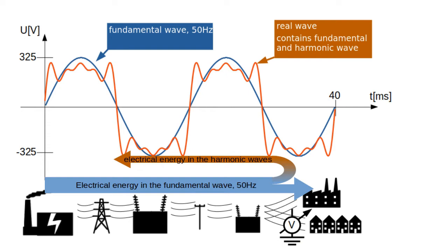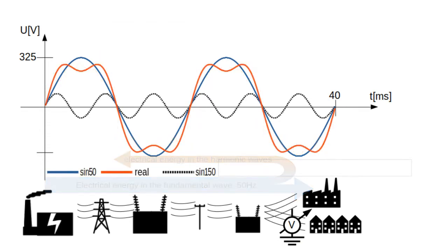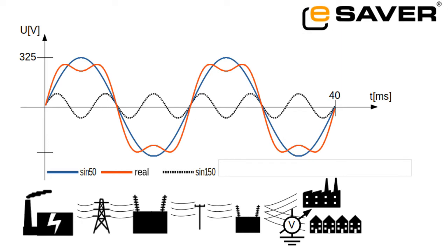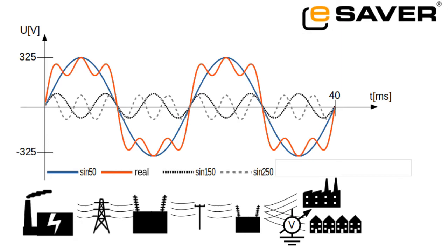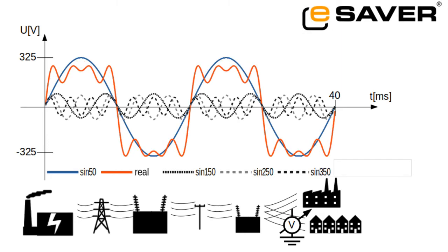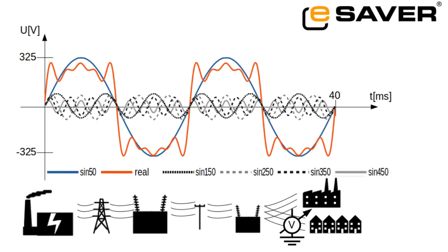Harmonics are waveforms with a frequency that is a multiple of the fundamental frequency. That is, they have a frequency of 150 Hz, in that case the resulting curve looks like this. Or additionally of 250 Hz, 350 Hz or 450 Hz.